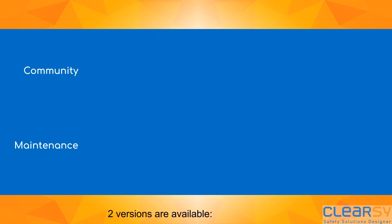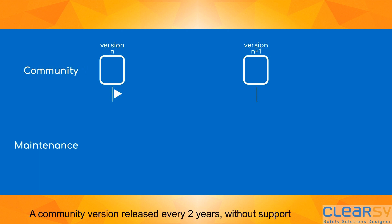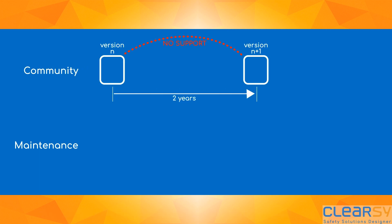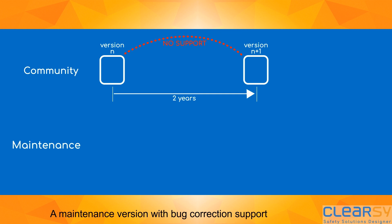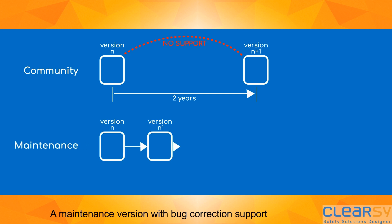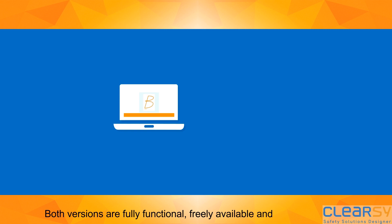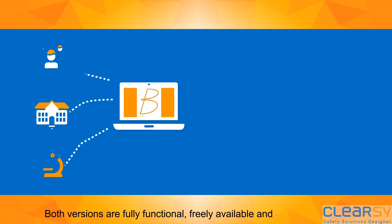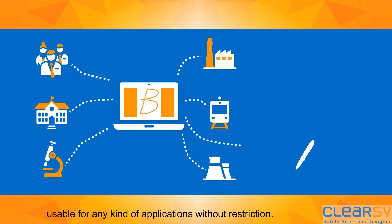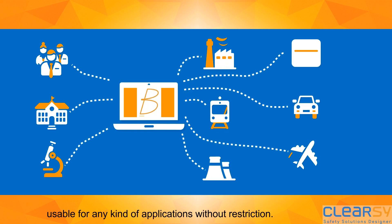New versions are available: a community version released every two years without support, and a maintenance version with bug correction support and additional pro features. Both versions are fully functional, freely available, and usable for any kind of applications without restriction.